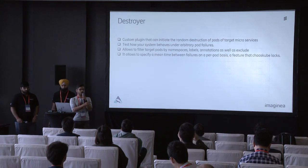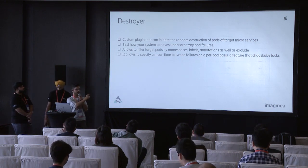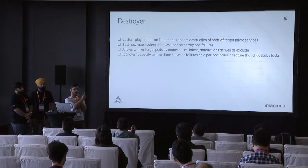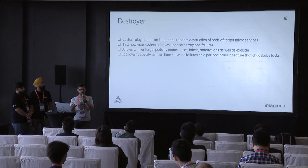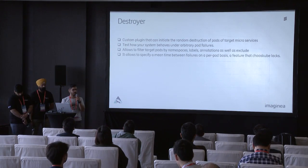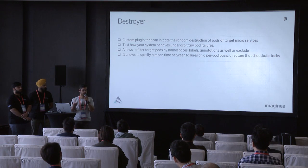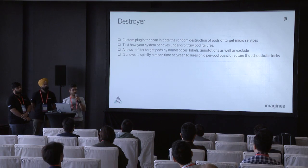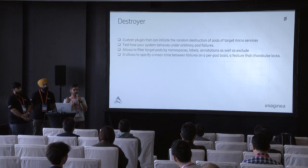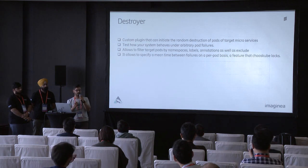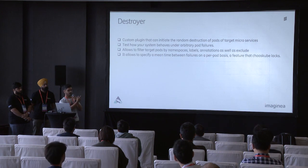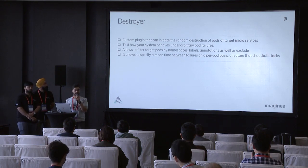The Destroyer component randomly kills pods and resources on Kubernetes. It targets a particular namespace, resource type (pod, deployment, etc.), labels, and node labels configured in the configuration file. It can kill multiple or single instances of a resource type. While destruction is happening and pods are being brought down, tests run in the background to ensure no API requests are dropped or failing — results are captured at the end.